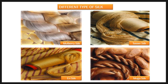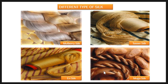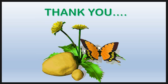This photograph shows the different types of silk produced from different silk moths. Mulberry silk is white or cream in color. Indian tropical tassar silk is copper-rich in color. Eri silk is white or brick-red in color. And muga silk is golden-yellow in color. Thank you, bye-bye for now.